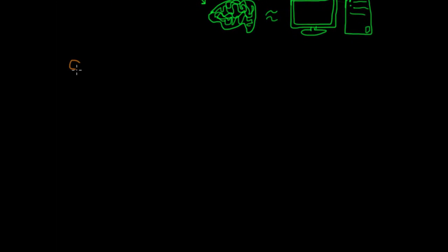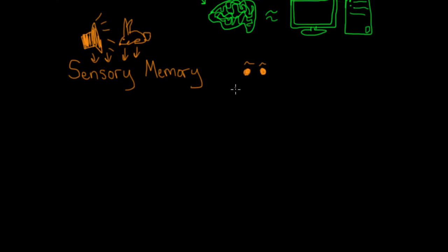The first stage, then, is getting the input, which occurs in sensory memory. This is sometimes also called the sensory register, just know it's the same thing as sensory memory. This is where you first interact with the information in your environment. It's a temporary register of all the information your senses are taking in. Even though you have five senses, the two most studied in terms of memory are sight and sound. So within sensory memory, you have iconic memory, which is memory for what you see, and echoic memory, which is memory for what you hear.